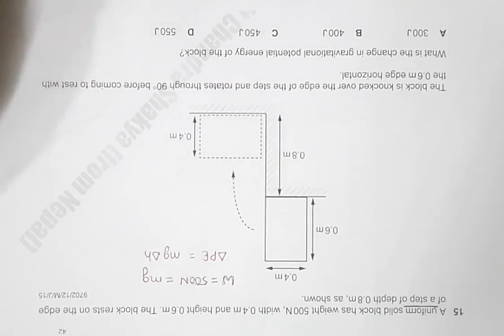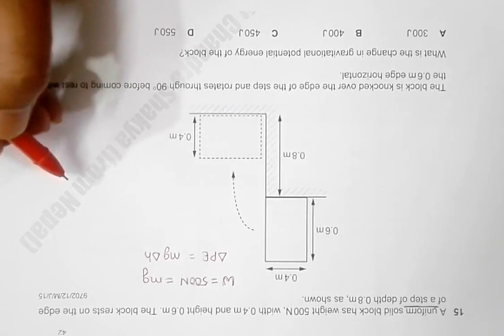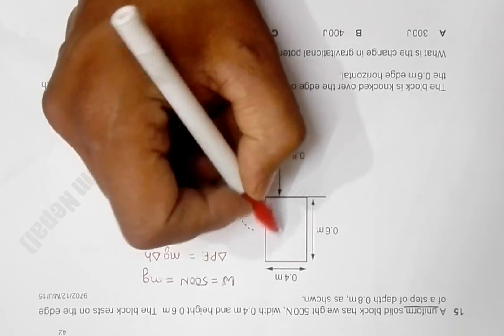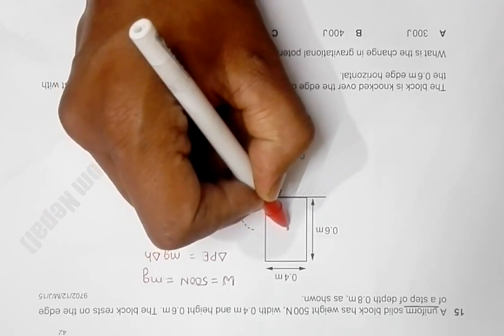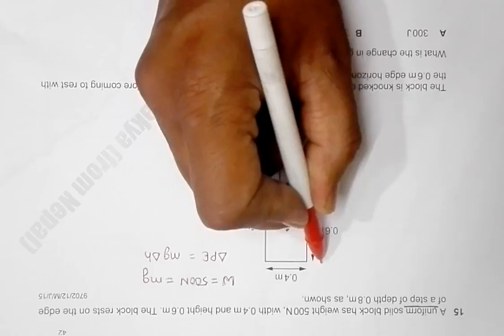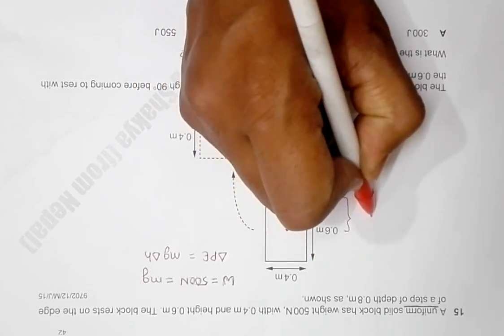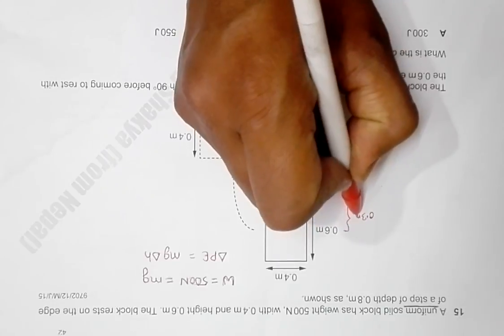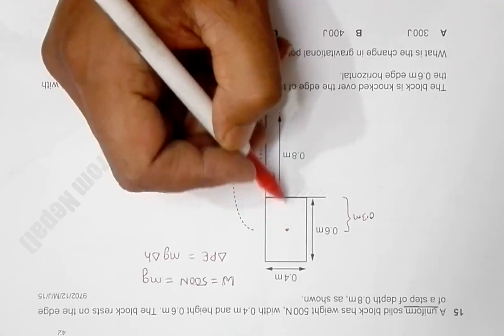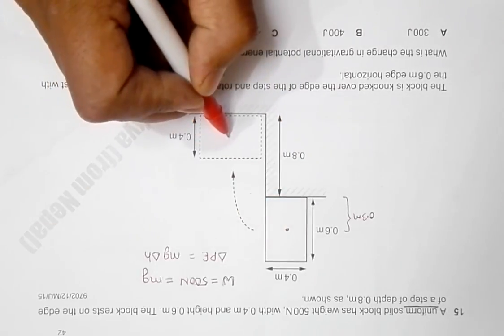When it was like this, the CG was somewhere here. Since it is 0.6 meters, this height will be 0.3 meters, assuming that the body is uniform and the CG will be exactly at the center. Similarly here, the CG will be somewhere here.